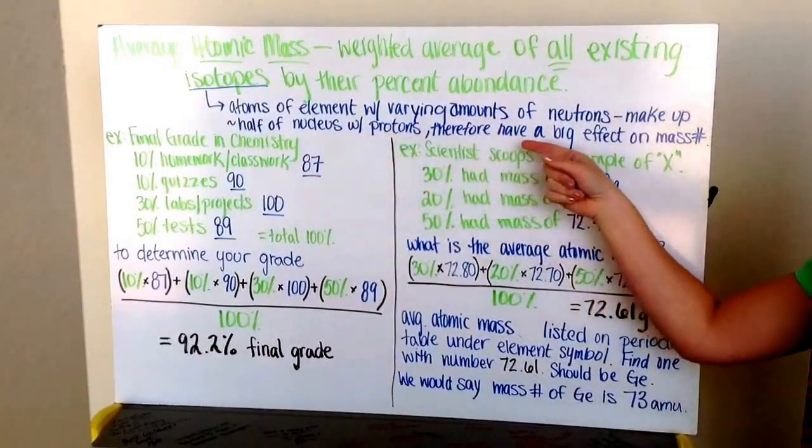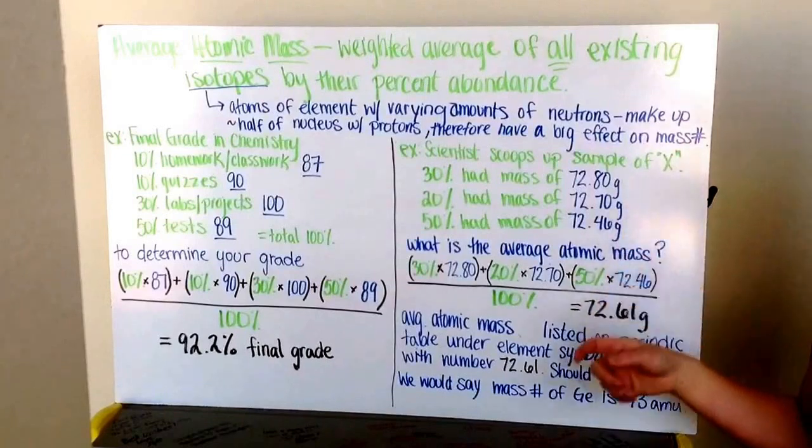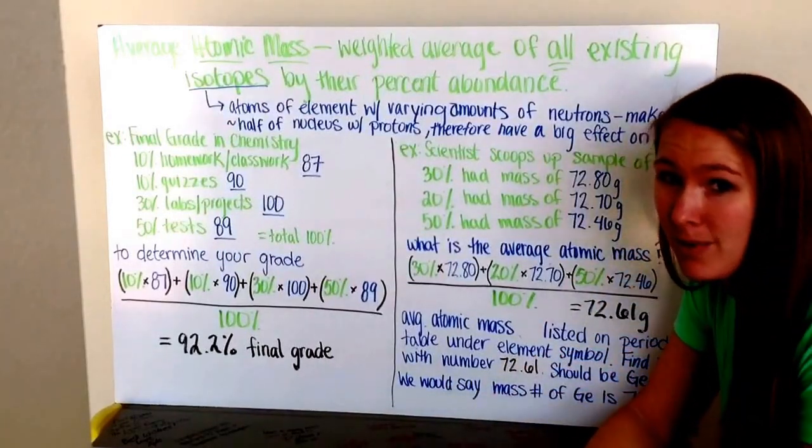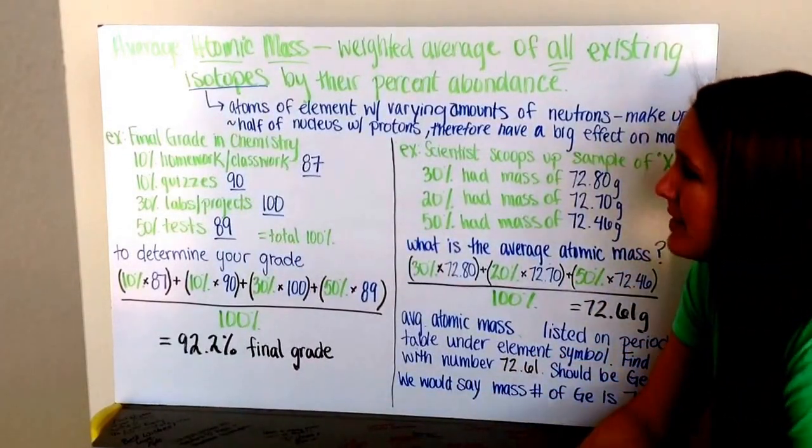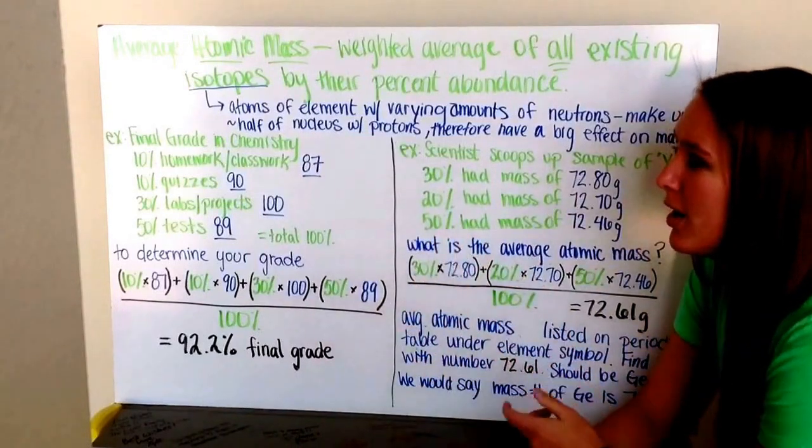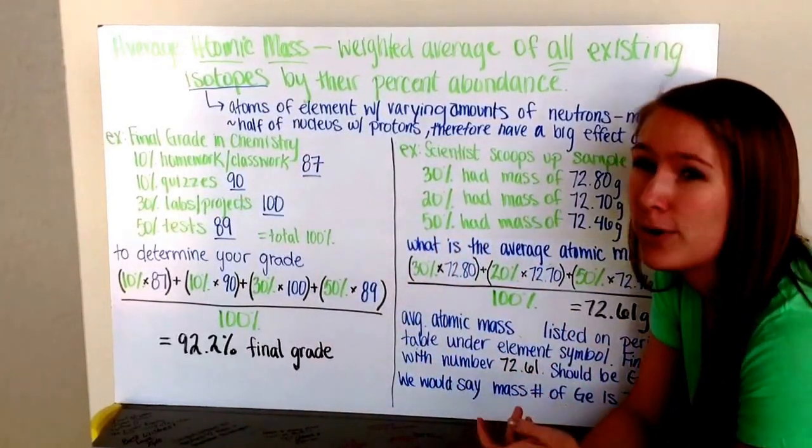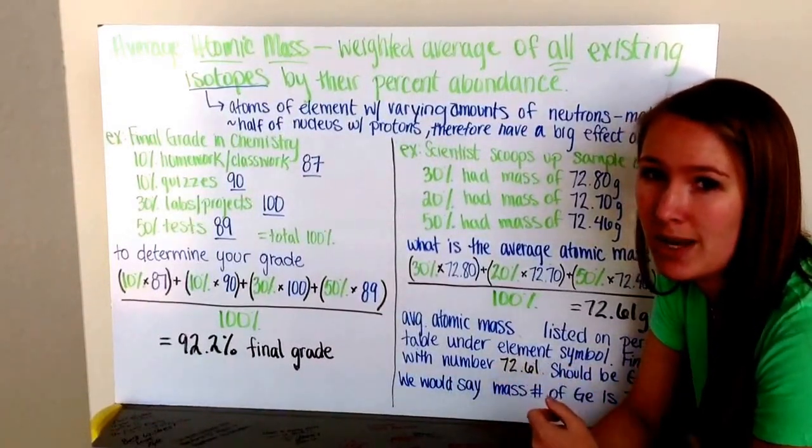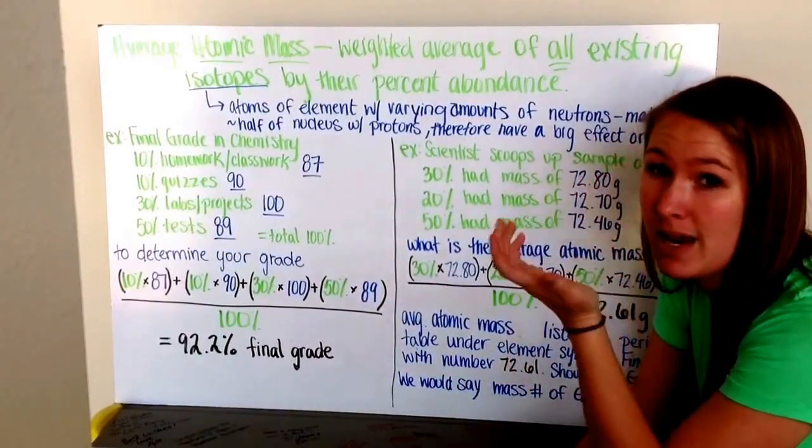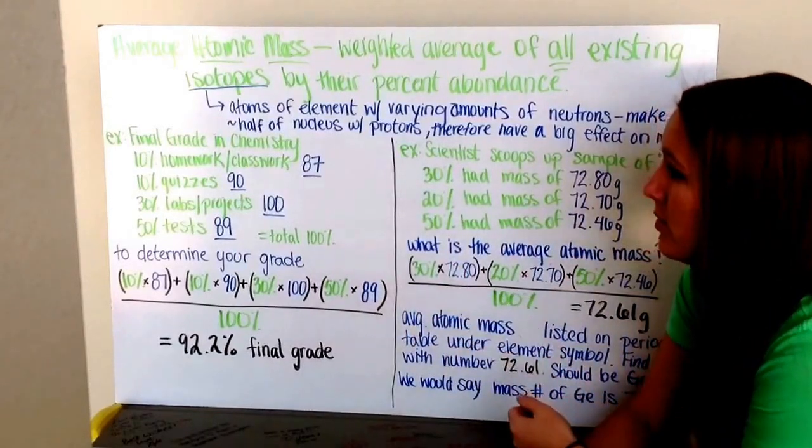Therefore, isotopes have a big effect on the mass number, changing it as we shift how many neutrons we have in the nucleus. Remember, protons stay the same because protons are what identify each element as itself.